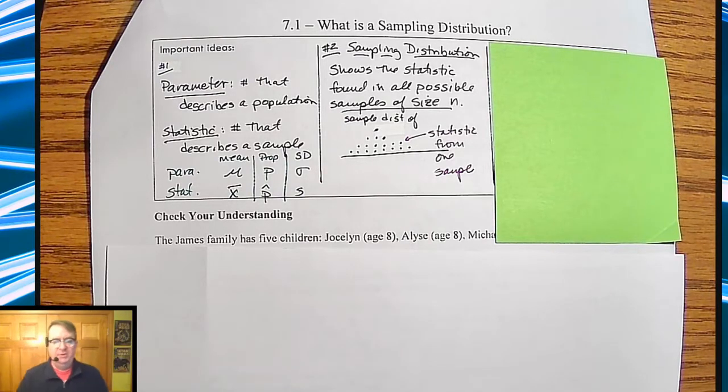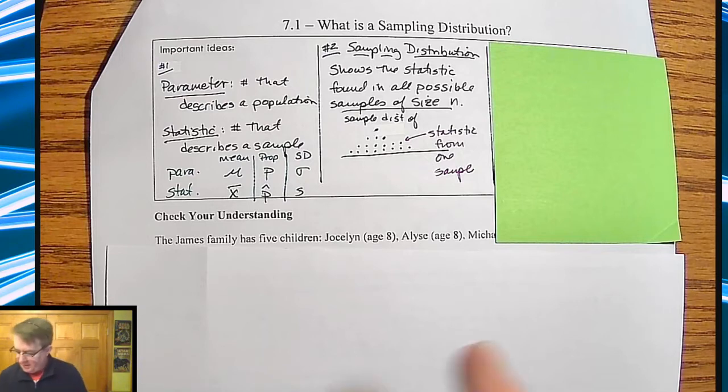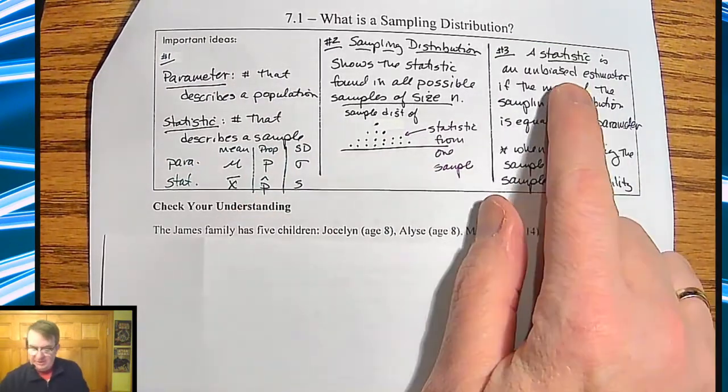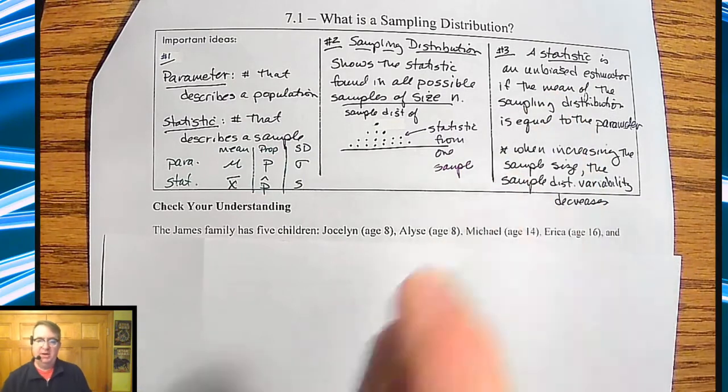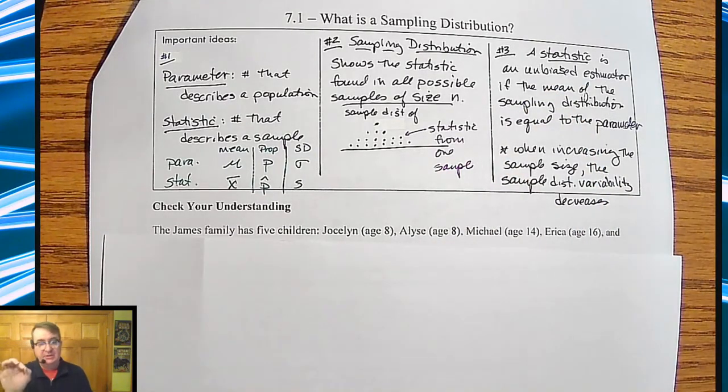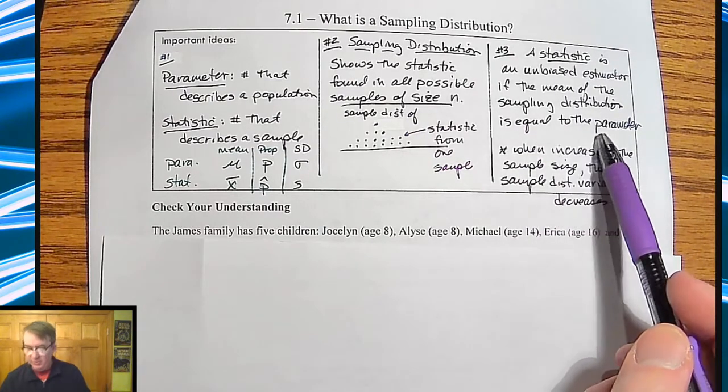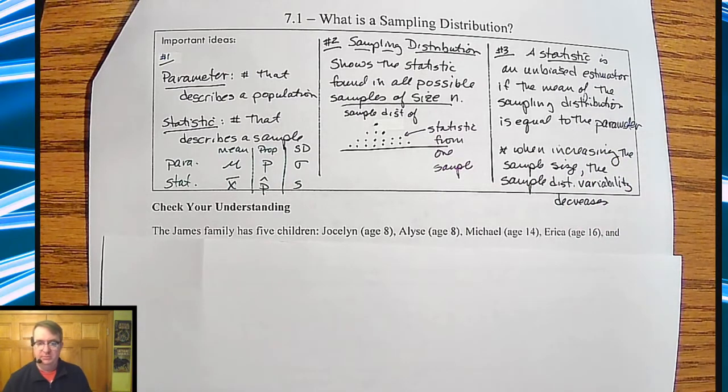Luke and Lindsay built a really good set. And then lastly, remember a statistic is an unbiased estimator. So the statistic that you're looking at is a good estimator for the population if the mean of the sampling distribution is equal to the parameter.